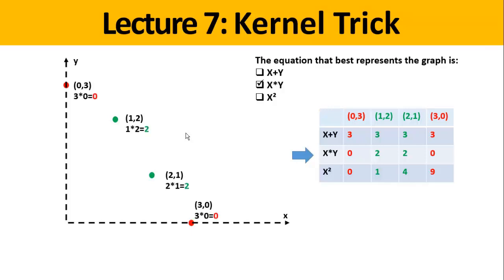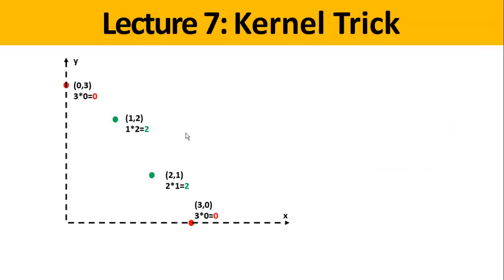Now let's put the results on the graph. You can see that for the red points we got 0 for each one, and for the green points we got x times y equals 2. What separates 0 and 2 is 1. And x times y equals 1 is exactly y equals 1 over x, which is the equation of a hyperbola that you can see here.